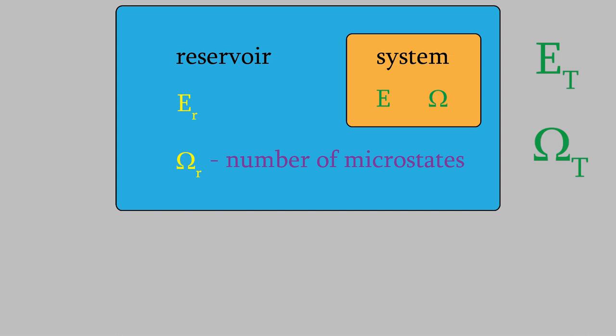Now, if the entropy of the system decreases, the entropy of the reservoir must increase, and the same is true for the energy. Energy is conserved, so a change in the energy of the system is accompanied by an opposite change in the energy of the reservoir. The reservoir almost always contains many more particles than the system does, so E-R, the energy of the reservoir, is much, much larger than E, the energy of the system. Also, the number of microstates that the reservoir can have is much, much higher than the number of microstates the system has.